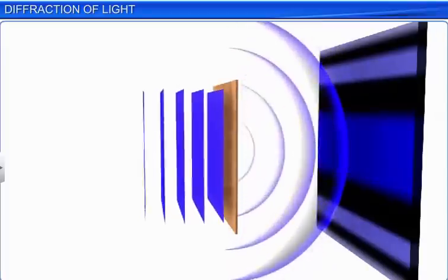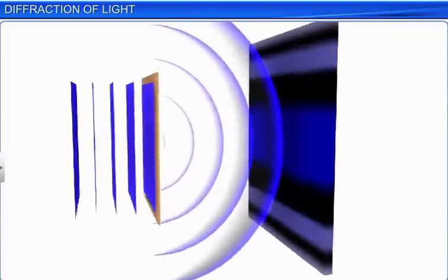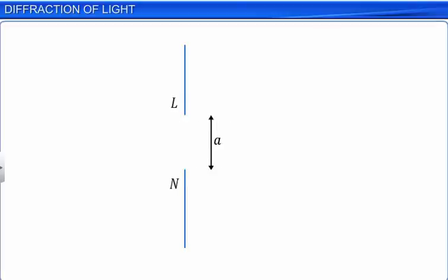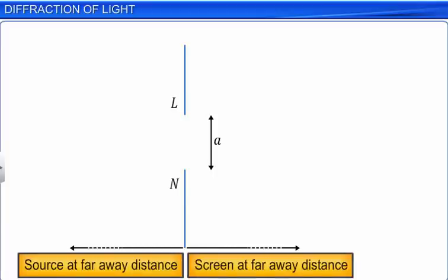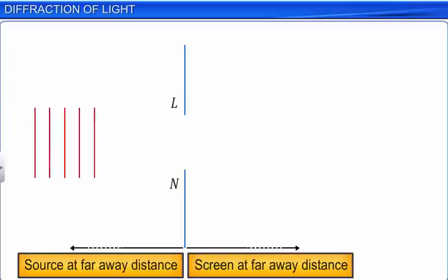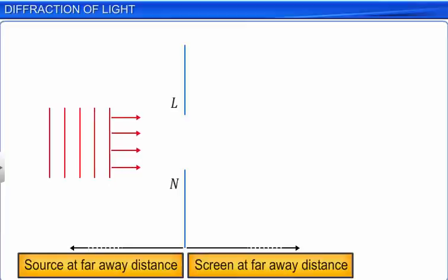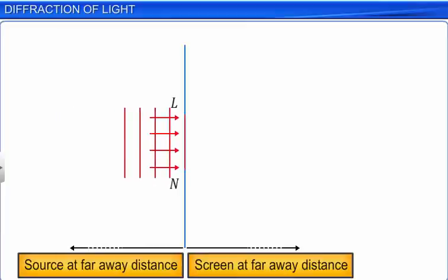Let us now analyze the diffraction pattern mathematically. We represent light as a beam of rays. Let the width of the slit be A, and let the source of monochromatic light and the screen be very far away from the slit. If the source is at a far away distance, we can regard the incident light as plane wavefronts; alternatively, the incident rays are parallel. When a plane wavefront is incident on the slit, all the points of the plane wavefront are in phase.